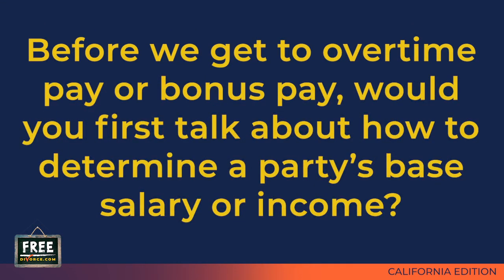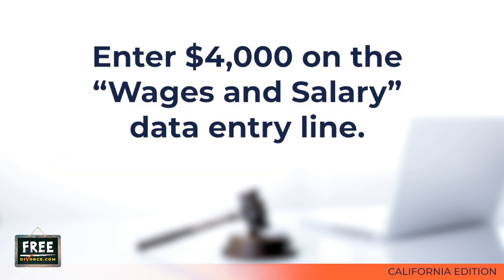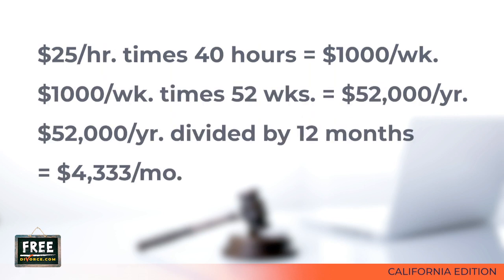Before we get to overtime or bonus pay, let's talk about how to determine a party's base salary or base income. The salary or wages number you enter into the Dissomaster Spousal Support Calculation Program is always the gross amount — the amount before taxes are taken out. Never use the net paycheck amount. If you get paid a base monthly salary of $4,000 per month, you just enter $4,000 on the wages and salary line. If your spouse gets paid an hourly wage and works full-time, take their hourly wage, multiply by 40 hours per week, then by 52 weeks, and divide by 12 months.